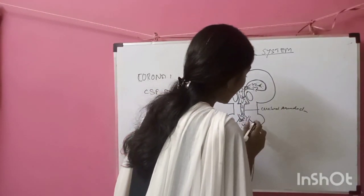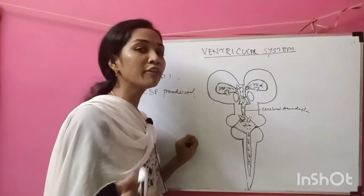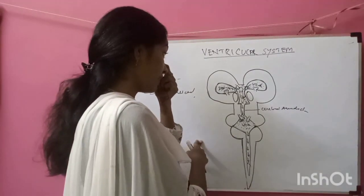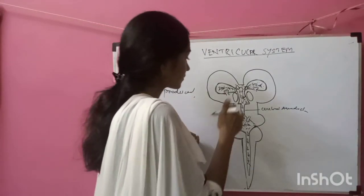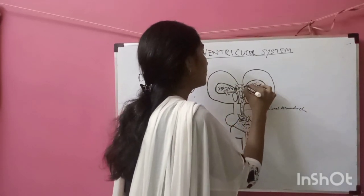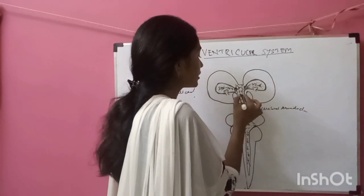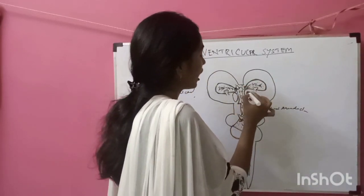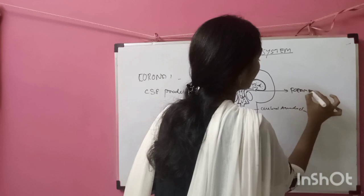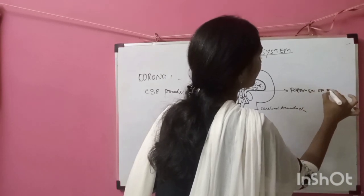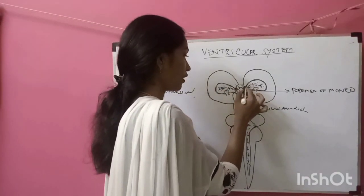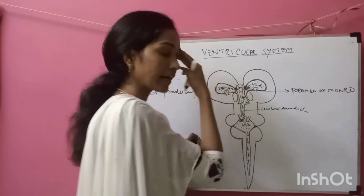Now I am going to tell you some important foramina present in the ventricular system. The first is the opening from the lateral ventricle (second ventricle) that leads into the third ventricle, which is called the Foramen of Monroe. There is a foramen of Monroe on both the left side and the right side.